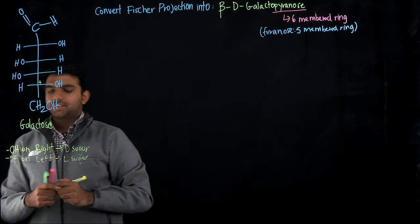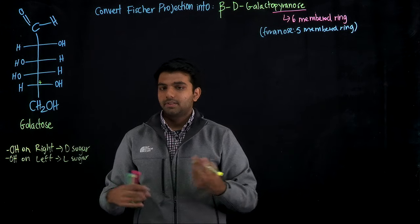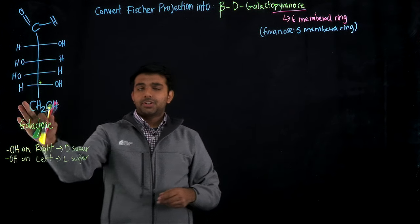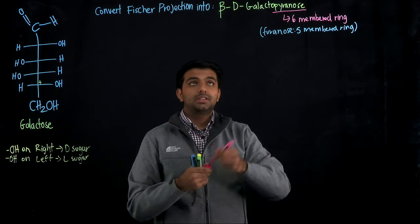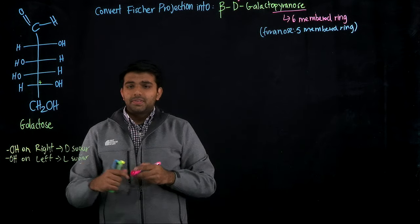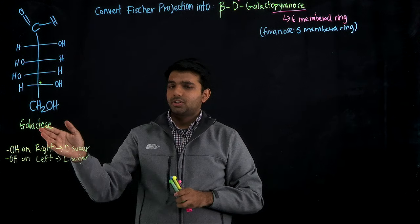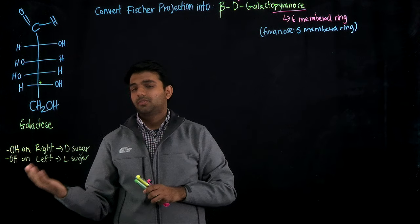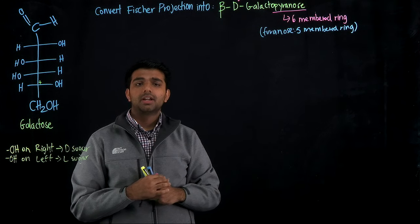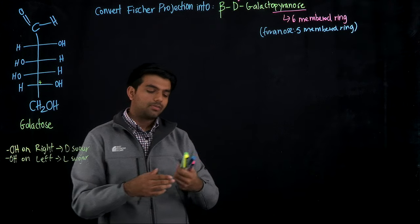A memory trick: if the OH is on the left, it's L — the two L's go hand in hand. If it's not on the left, then it's on the right, making it a D sugar. This Fischer projection has already been given to us in the D form, so we don't need to worry about that. Also note that alpha and beta are notations given to a sugar after it has cyclized — they apply to the Haworth projection and chair conformation, not the Fischer projection itself.